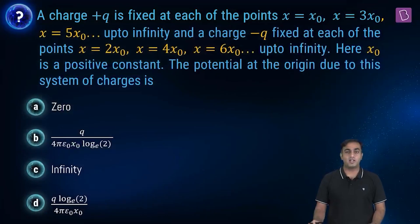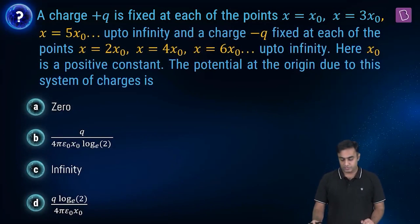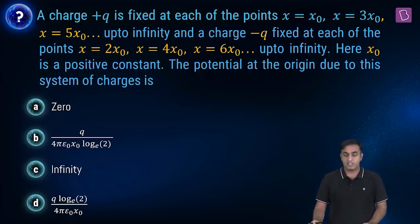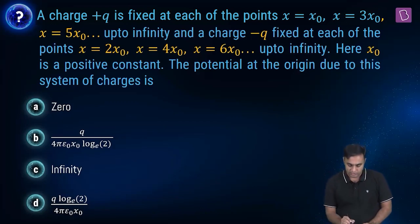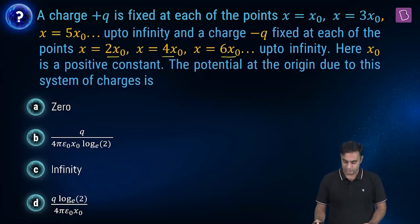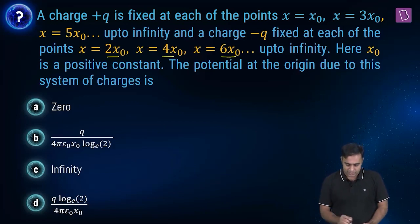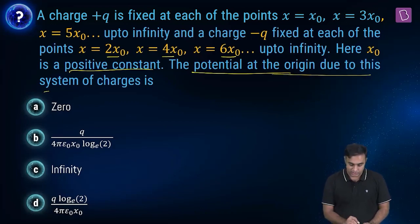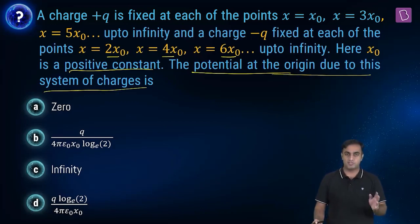Let me help you in interpreting the data from this question. There is a charge plus Q fixed at each of these points: x0, 3x0, 5x0 up to infinity. And there is a charge minus Q fixed at each of these points as well: 2x0, 4x0, 6x0 up to infinity. x0 here is a positive constant and with this information, find the potential at the origin due to the system of charges.